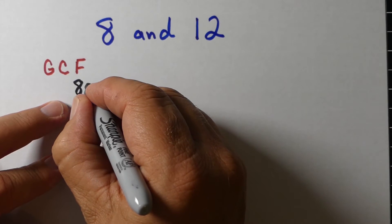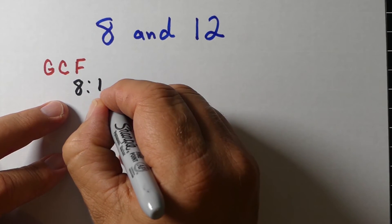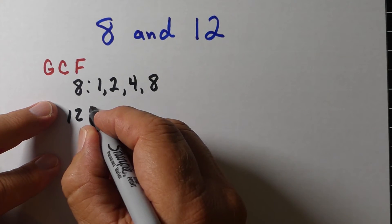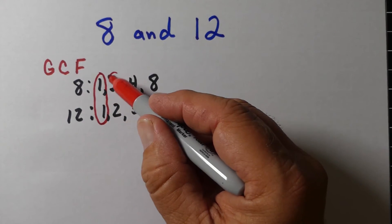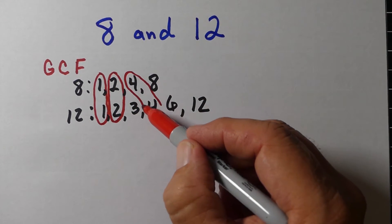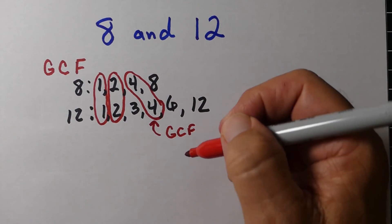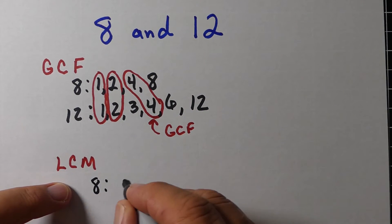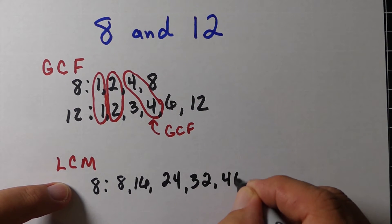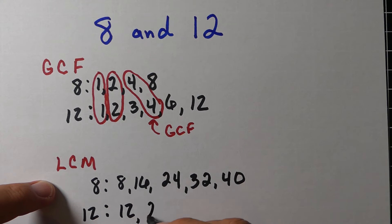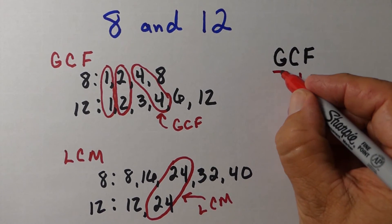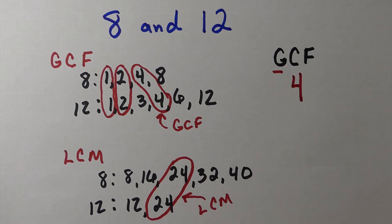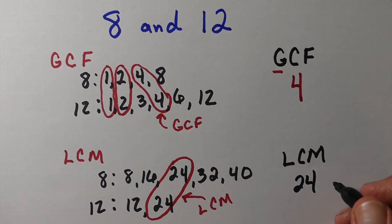Now let's look at eight and twelve together — finding both the greatest common factor and least common multiple. Looking at the factors, they share one, two, and four. The greatest common factor is four. For the least common multiple, we find the multiples of eight and twelve, and the very first one they share is twenty-four. So twenty-four is the least common multiple. To summarize: for eight and twelve, greatest common factor is four, and least common multiple is twenty-four.